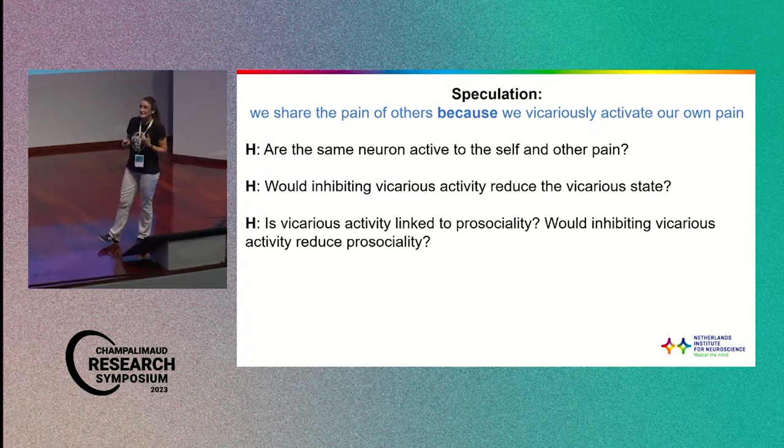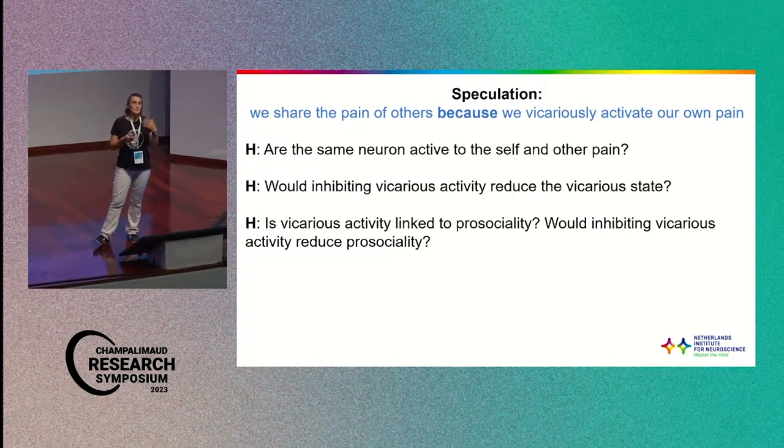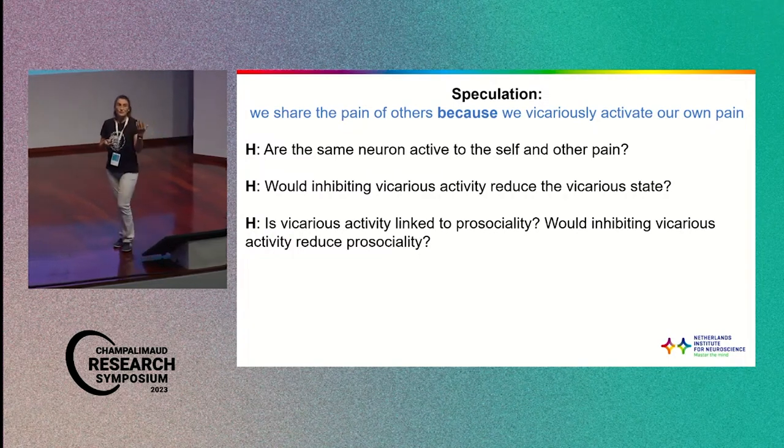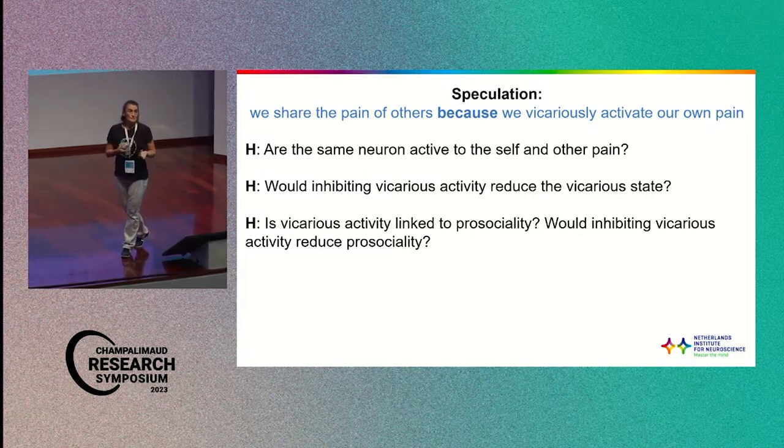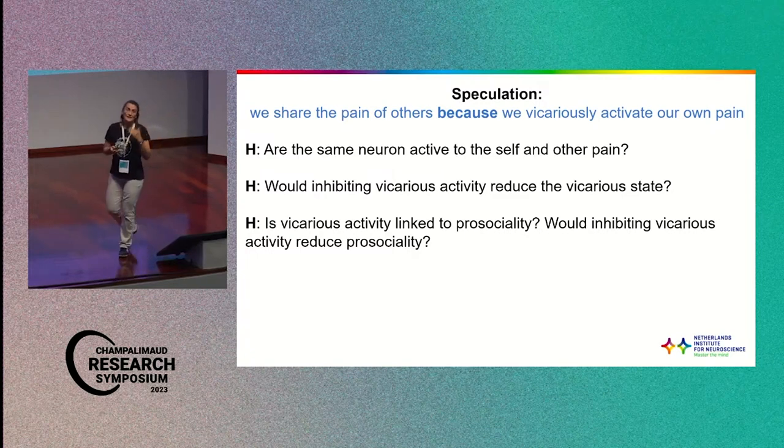But again, because the insula and anterior cingulate cortex are much deeper in the brain, these traditional stimulations and neural stimulation methods are difficult to use. And finally, there is this common intuition that the sharing of the affective state of others is the precursor of empathy and also of prosociality. Is this true? And these are all questions that we are going to try to address by combining our human work with animal work.